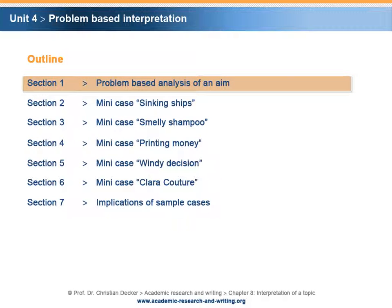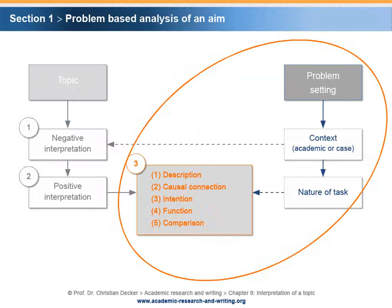Section 1 – Problem-based analysis of an aim. In Unit 3, five potential aims have been explained from a theoretical perspective. In the following, the problem-based interpretation needs to be analyzed in greater detail. Five mini-cases with individual problem settings are introduced in order to illustrate the context-driven interpretation of topics.